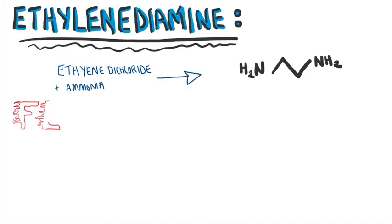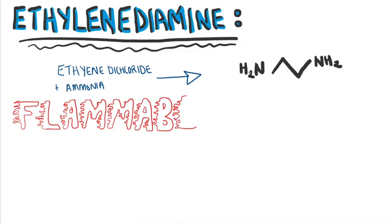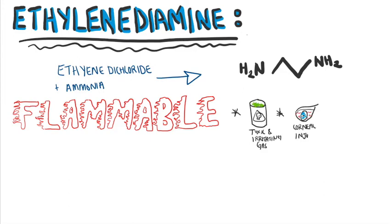Some of ethylene dichloride hazards are: it is highly flammable, can produce toxic and irritating gas, contact with eyes causes corneal injury, and inhalation causes nausea, drunkenness, and depression.